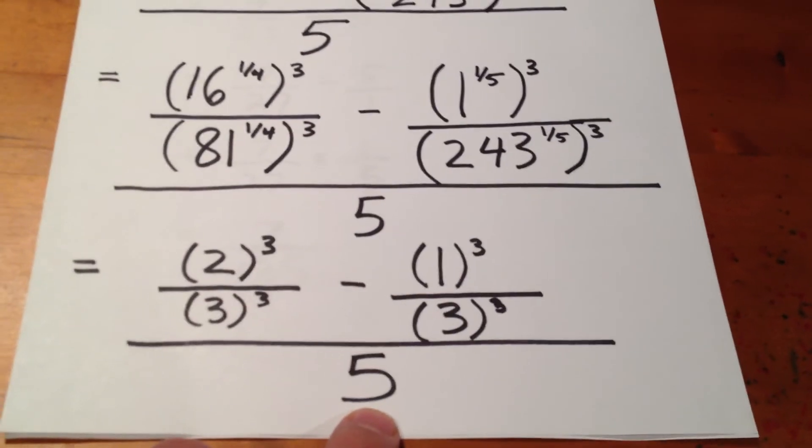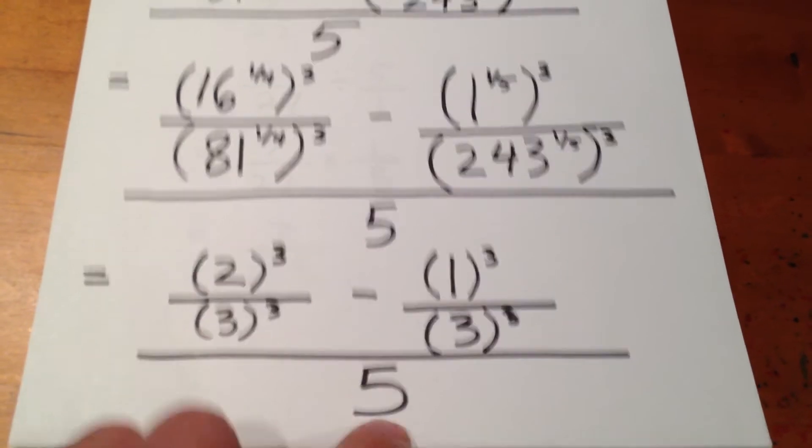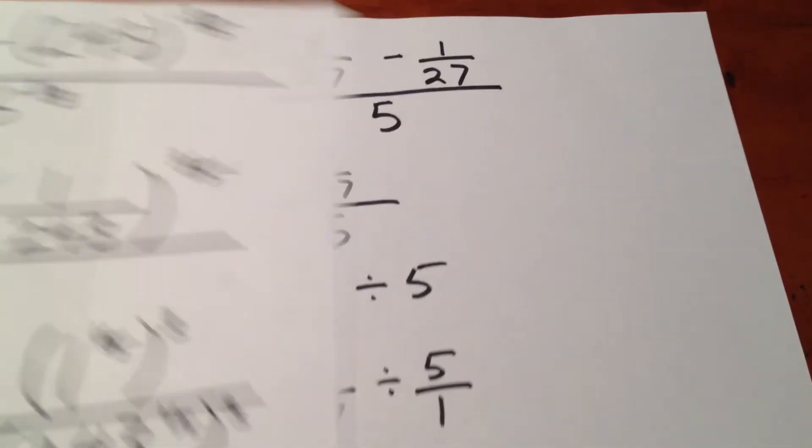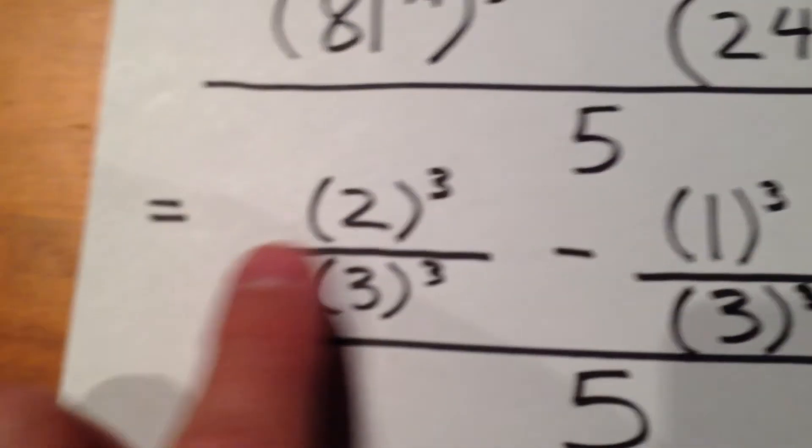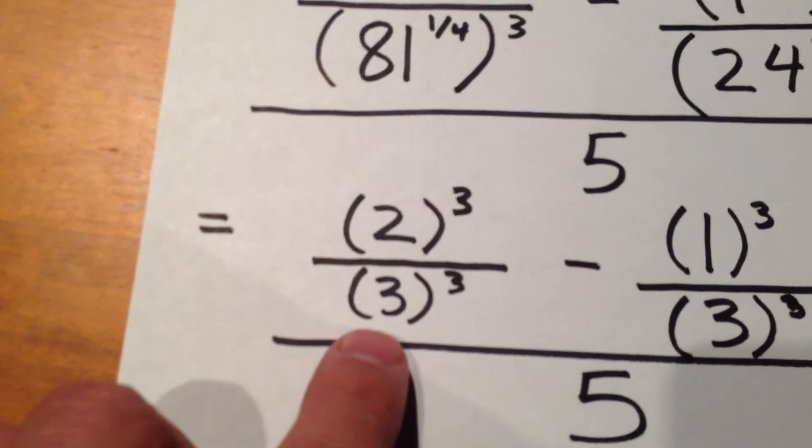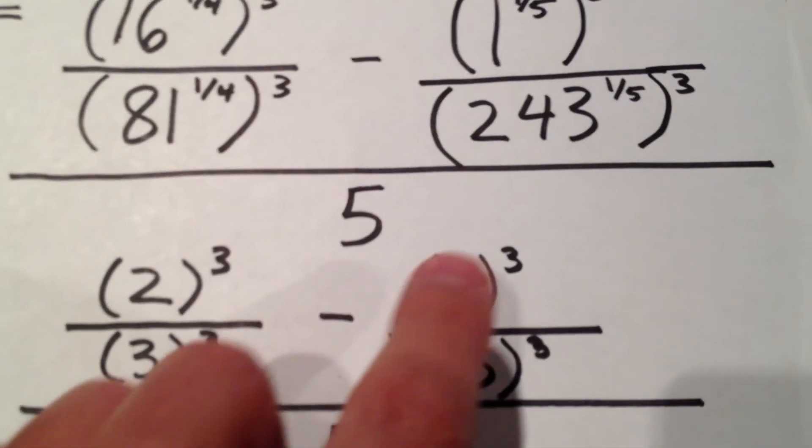And, again, we still have to divide everything by 5 because that's still there, too. So, moving along to the next, we see 2 cubed is 8, 3 cubed is 27, 1 cubed is 1, and 3 cubed is 27.